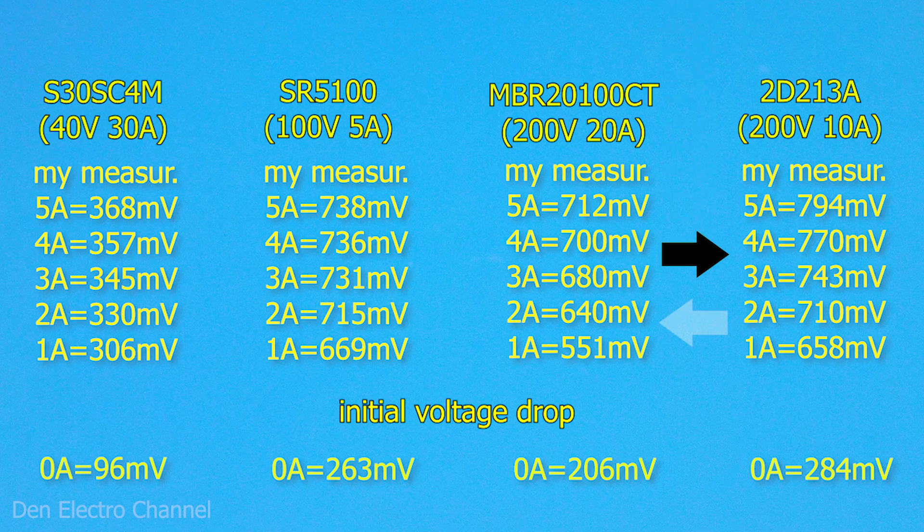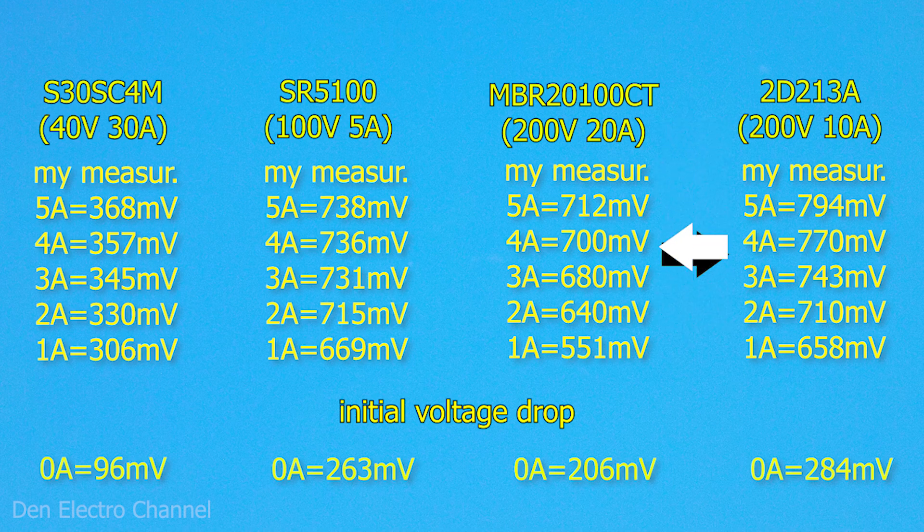Compared to its closest analog, the Schottky diode, the voltage drop here is greater, from 70 to 100 millivolts. But in terms of maximum current, everything is very deplorable.